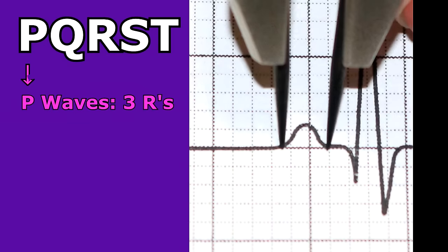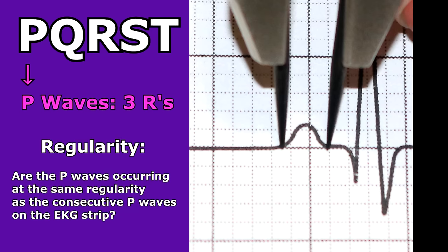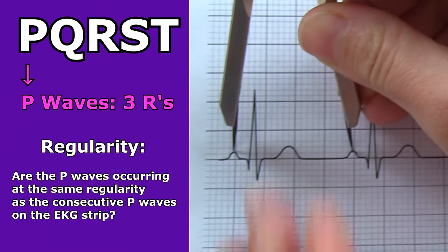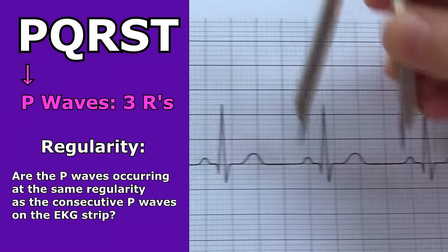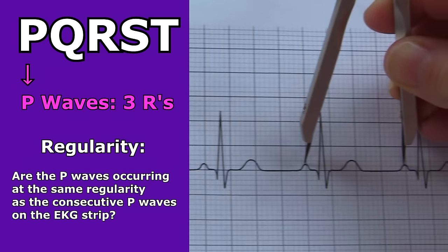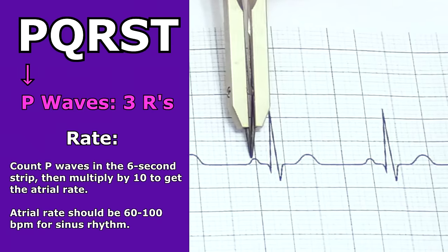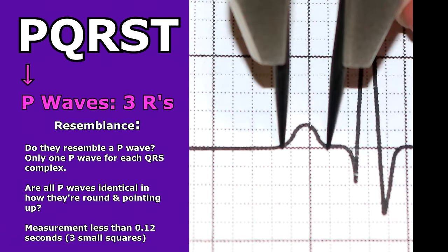The first thing you want to look at are the P waves, thinking of the three R's: regularity, rate, and resemblance. For regularity, ask yourself: are the P waves occurring at the same regularity as the consecutive P waves on the EKG strip? P waves represent the atria. With your calipers, start at the first P wave, spread to the second P wave, and go from P wave to P wave making sure they're all lining up the same distance. If you don't have calipers, you can use paper. Then look at the rate: count the P waves within the six-second strip, then multiply by 10 - this is the atrial rate, which should be around 60 to 100 beats per minute for normal sinus rhythm. Then check resemblance: there should be only one P wave in front of every QRS complex, all P waves should be identical - round, pointing up - and less than 0.12 seconds.